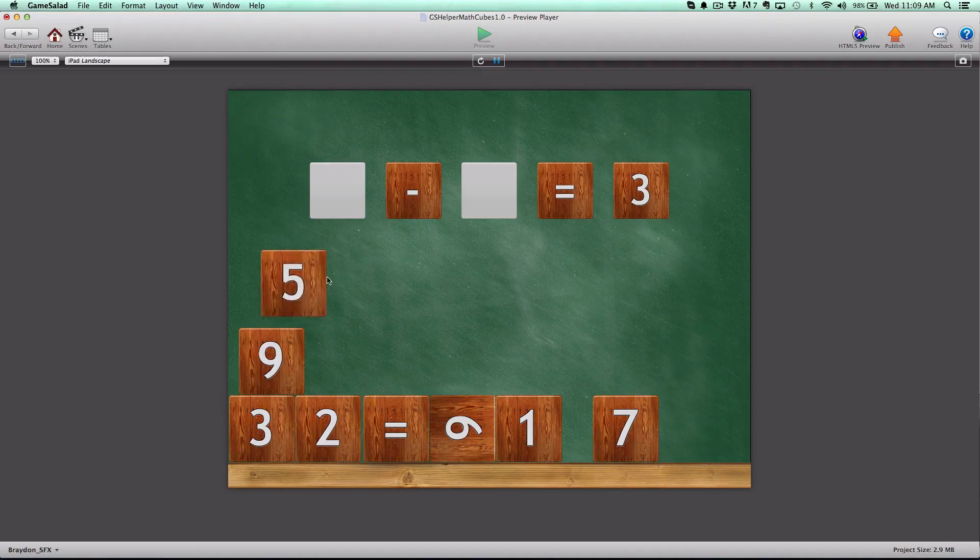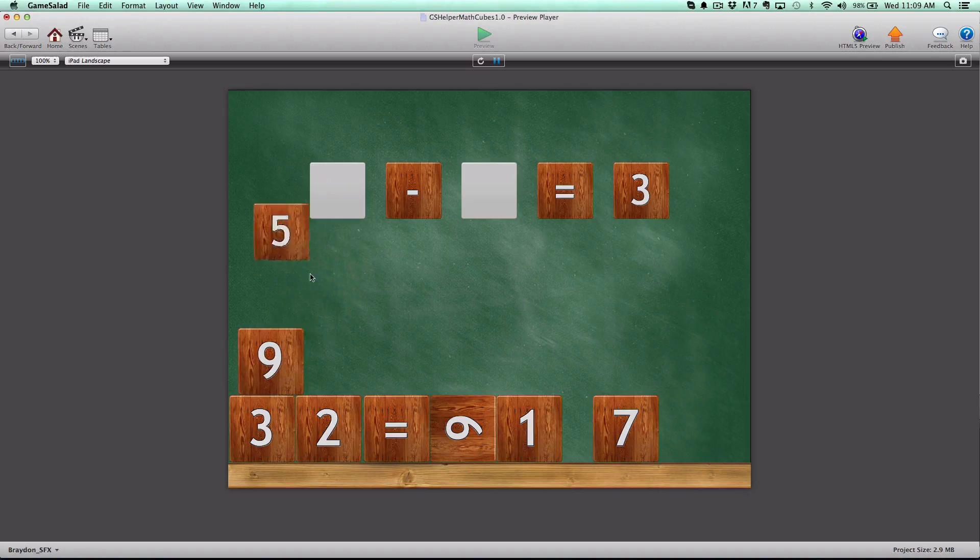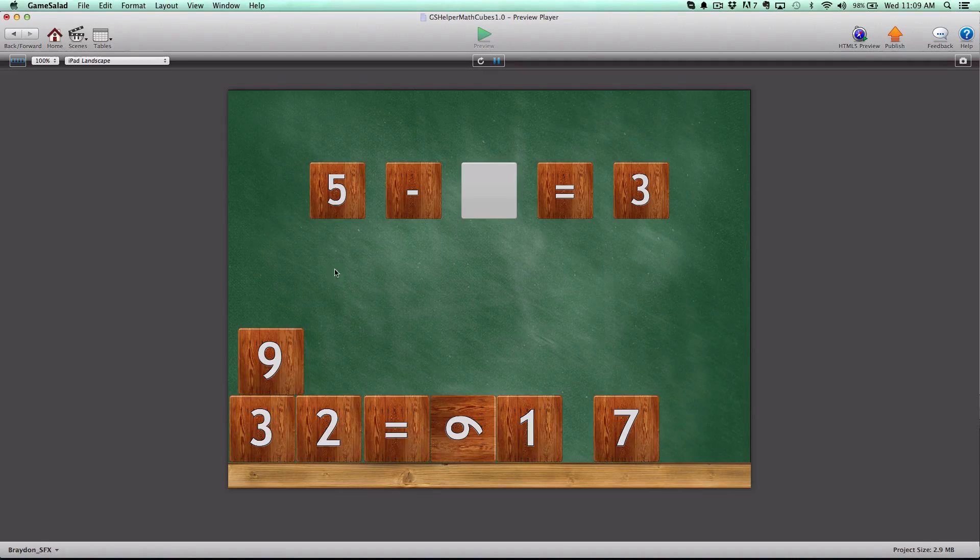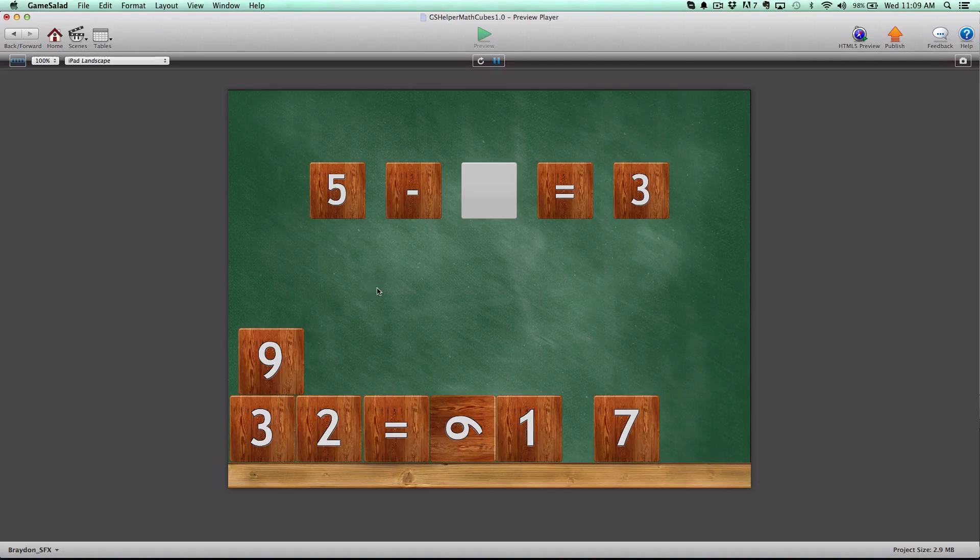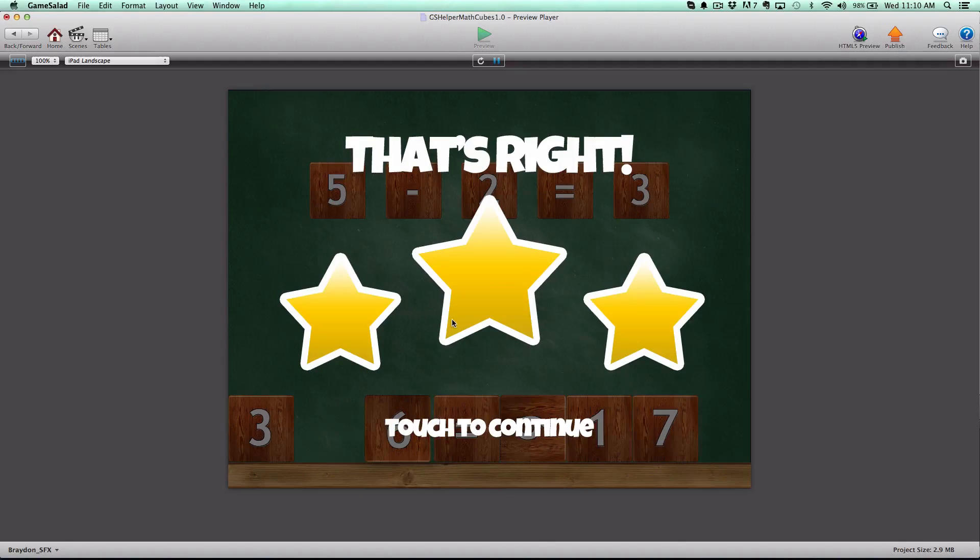You can't just throw a cube at the block. You have to be near it when you let go. It feels really good how it's set up—it'll snap to position when it's in a certain radius of the blank. 5 minus what equals 3? 5 minus 2 equals 3. We get the level complete.